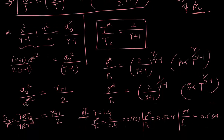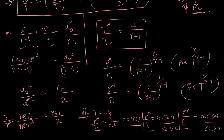T*/T0 = 0.833 means that if we take a fluid element at rest (v = 0) and accelerate it to Mach number 1, the temperature drops to 83.3% of the stagnation temperature. Similarly, the pressure at M = 1 is 52.8% of the total pressure, and the density at M = 1 is 63.4% of the stagnation density.